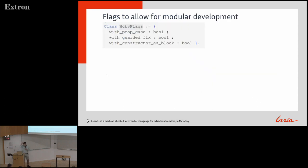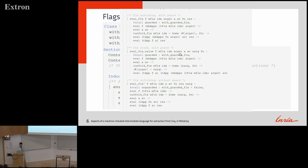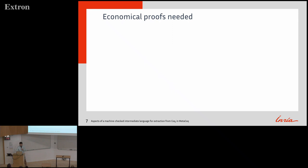We have a class — like a record — parametrizing which version of LambdaBox we're looking at. We say: can you match on a box or not? Is the fix guarded — structural or not? Are constructors blocks or not? The call-by-value evaluation relation is parametrized in these flags. Here are the two rules for structural fix where the guarded flag is true, and the rules without it where the flag is false. Depending on how you set the flag, you get one or the other relation, and then you do the metatheory parametrized over all flags.